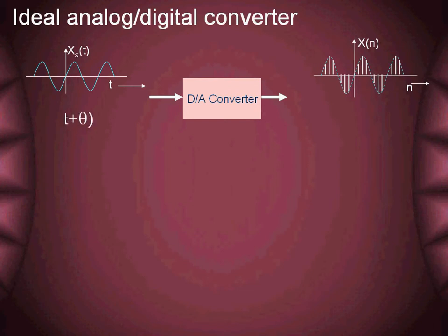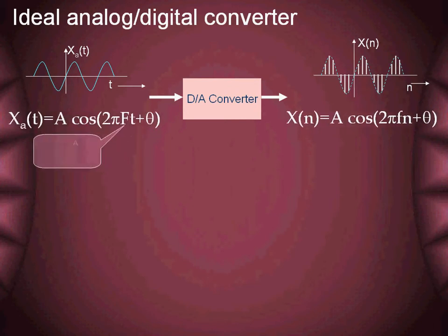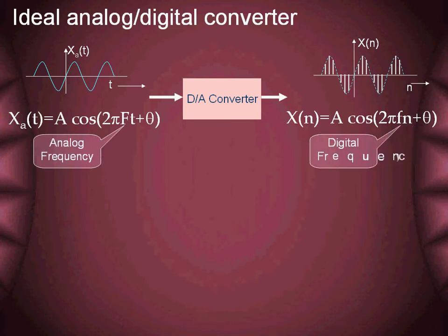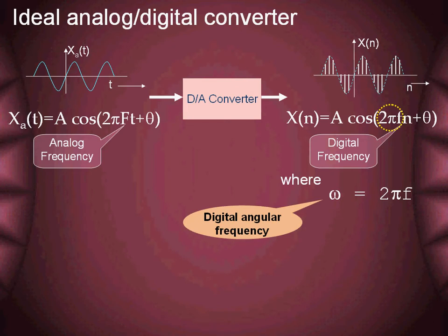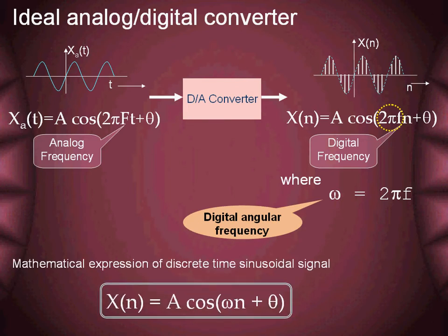Summarizing, an ideal digitization process performed by an analog-to-digital converter converts the analog frequency into an equivalent digital frequency. The term 2πf is called the digital angular frequency.